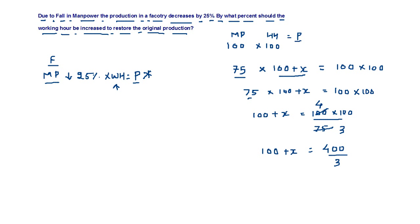100 plus x is 400 upon 3. We can take this 100 also on the right hand side. So x is 400 upon 3 minus 100. On solving we get 100 upon 3.